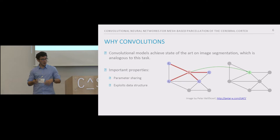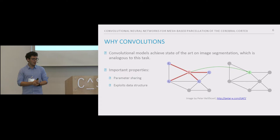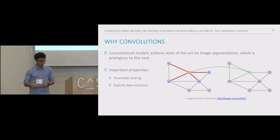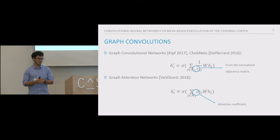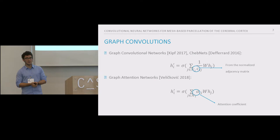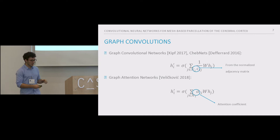The problem is that we cannot directly apply 2D convolutional layers to our data because it is represented in a different domain. We have resorted to using graph convolutional networks. In recent years there has been a lot of work on generalizing convolutions to different domains. One recent approach is graph convolutional neural networks, or ChebNets, which approximate the graph convolution in the spectral domain using Chebyshev polynomials of different orders. We also used an attention-based method that computes self-attention coefficients between each pair of nodes and uses these as the convolutional weights.